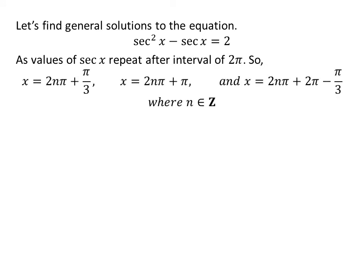Let us find the general solutions. Since the value of secant of x repeats after an interval of 2π, the general solutions are: 2nπ plus π/3, 2nπ plus π, and 2nπ minus π/3, where n is an integer.